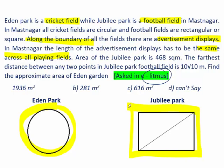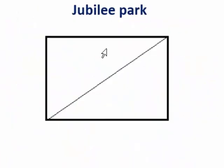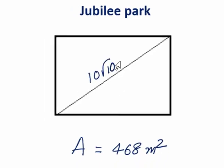Now he has given if the area of the Jubilee Park is 468 and the longest distance is 10 root 10, then he is asking find the area of the Eden Garden. Now let me take you around to the question. Let us try to see something about the Jubilee Park. Here the area is given as 468 meter square and the longest distance is 10 root 10 meter.